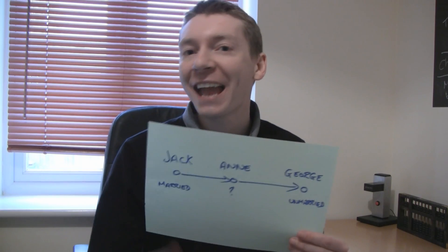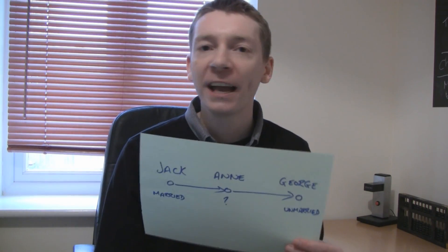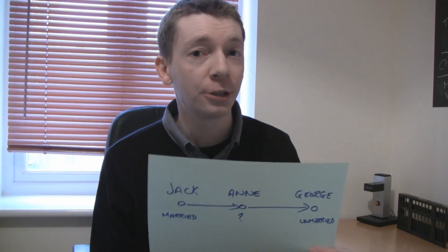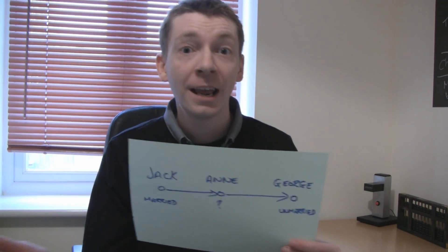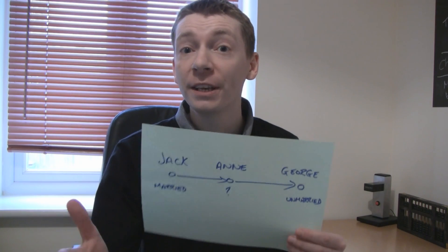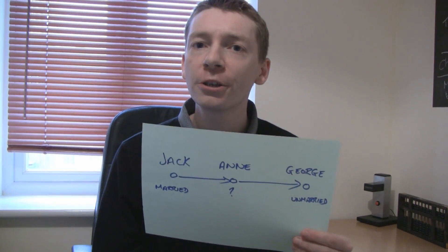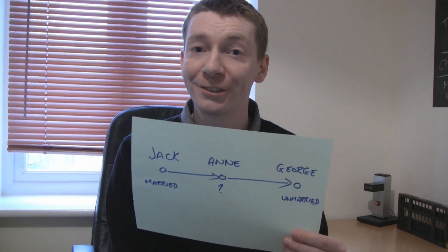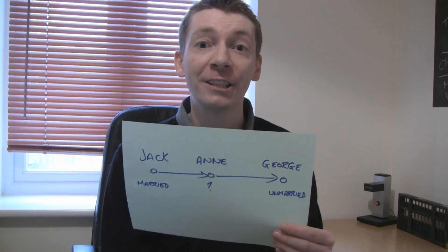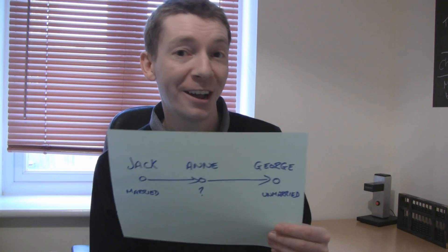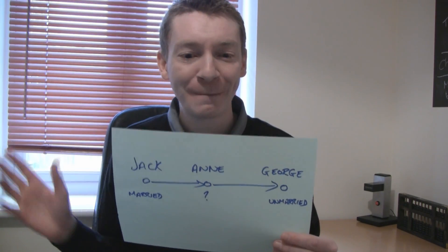The other problem might be that the question doesn't say anything about where George is looking. Again, people who are more experienced with puzzles might think, well, if that information is not included in the question, then I probably don't need it to determine the answer. The other point is the question says, is a married person looking at an unmarried person? And here George is unmarried, so it's actually irrelevant where he's looking. He could be staring off into space for all I'm concerned.